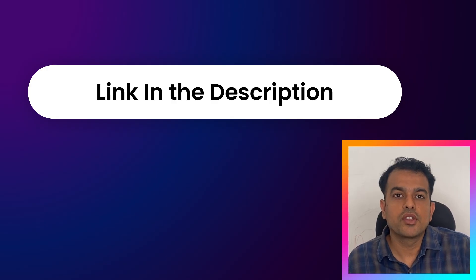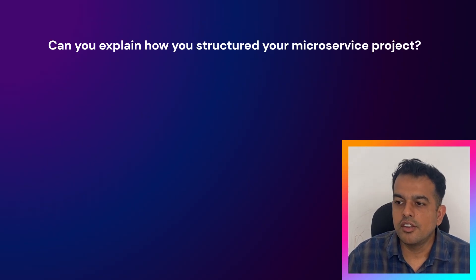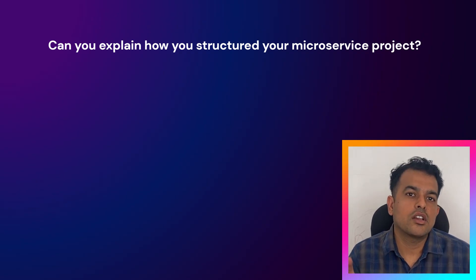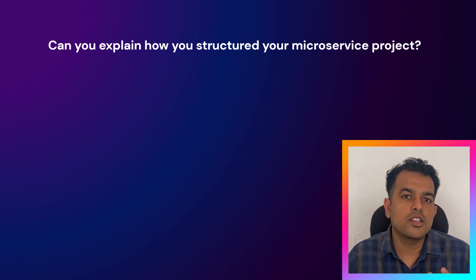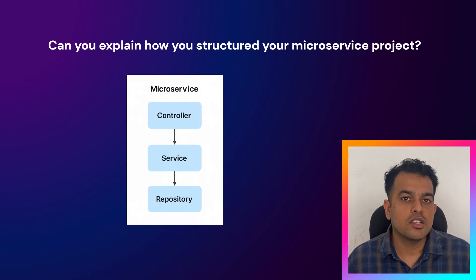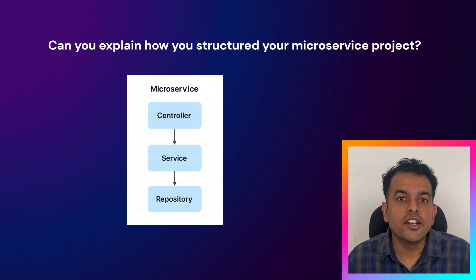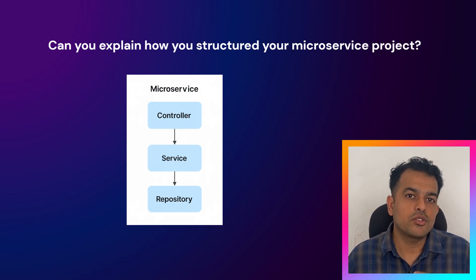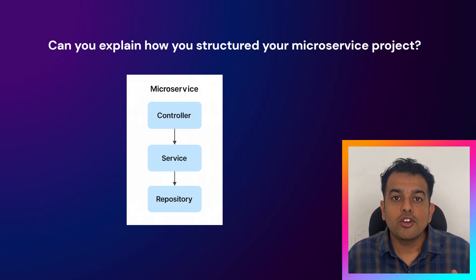Then the interviewer moved to a project-based question: can you explain how you structure your microservice project? You can start by saying each service follows a standard three-layered structure — controller, service, and repository. The controller handles REST requests, the service layer contains business logic, and the repository layer interacts with the database using JPA.